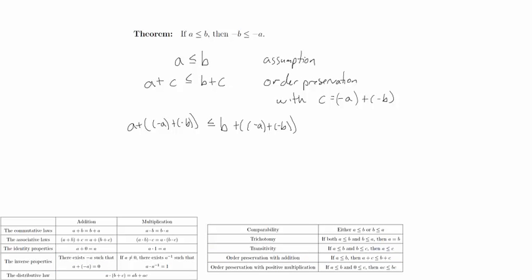First, we will substitute in these values. Then, by using the commutative law of addition and the associative law of addition, we can rewrite this in a way that shows that we will get cancellation. Then, by using the inverse properties and the identity property, we get the desired result.